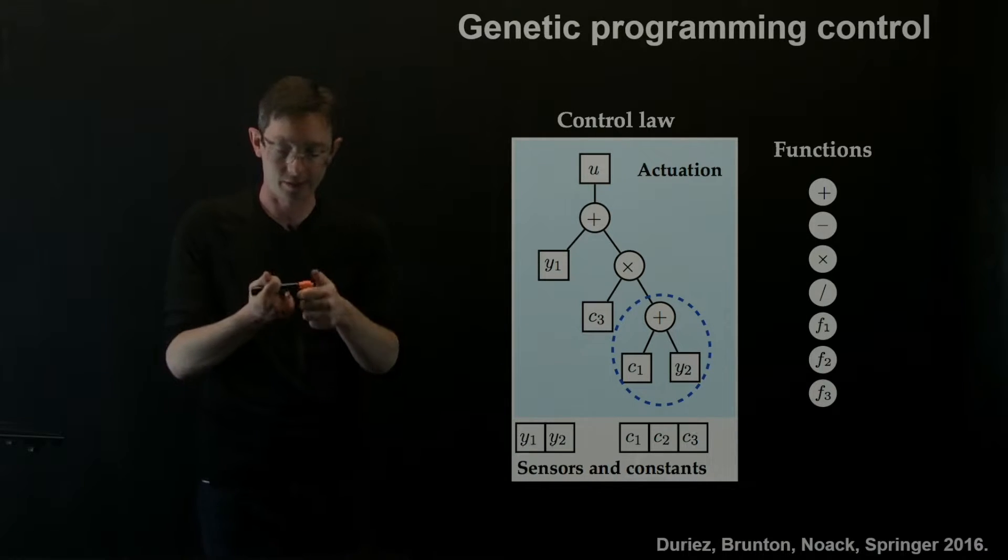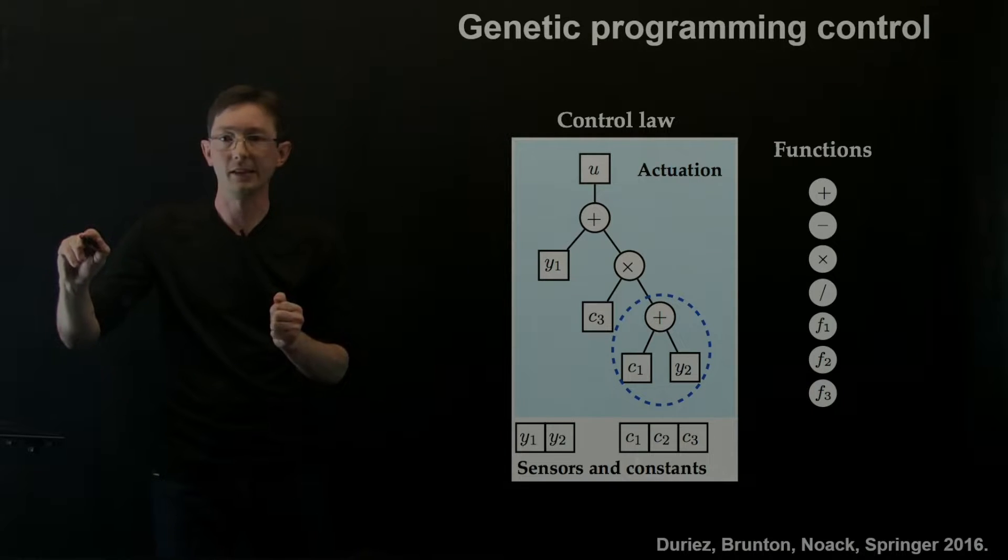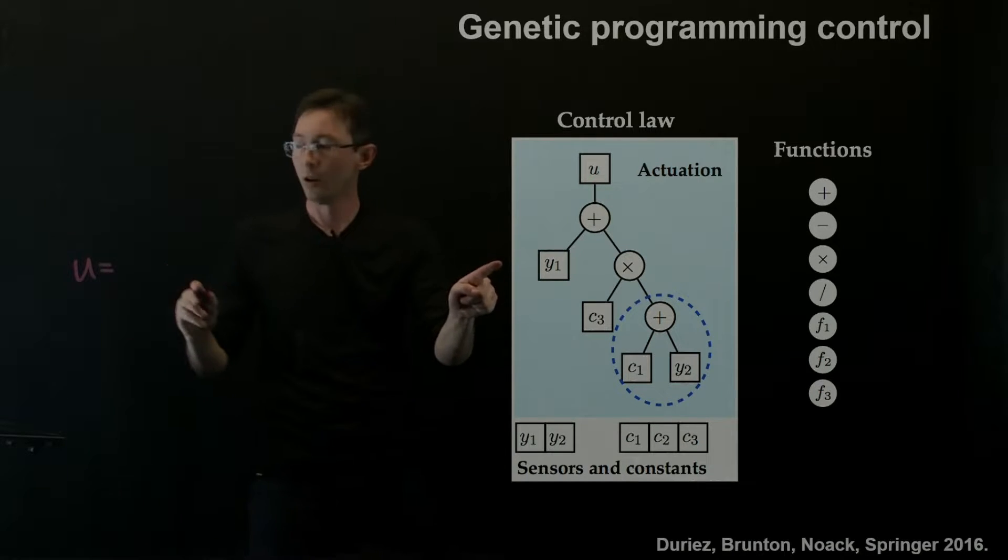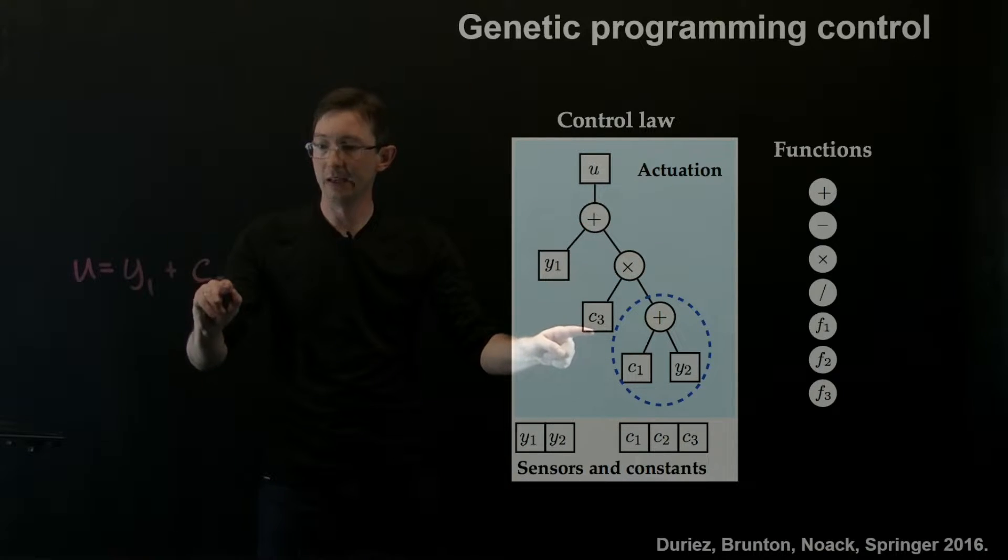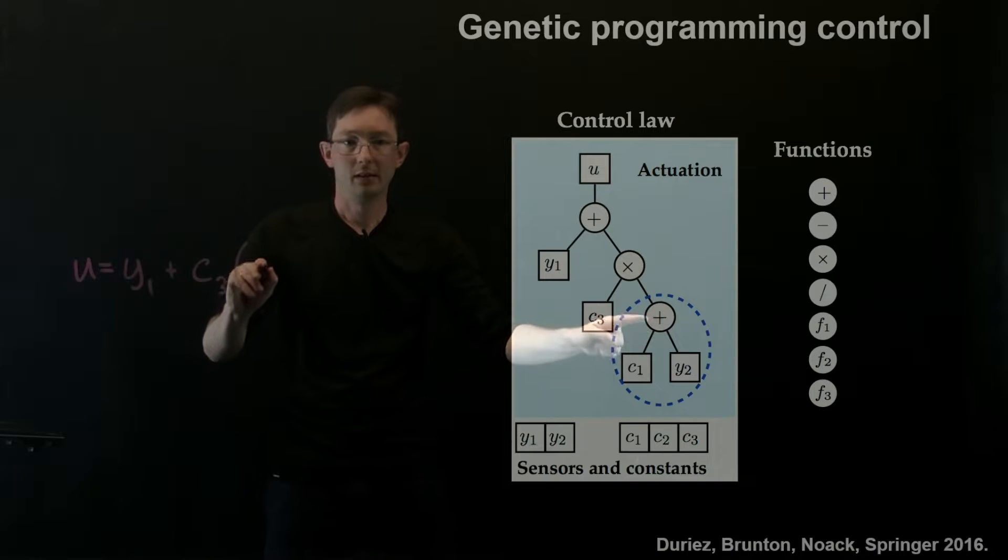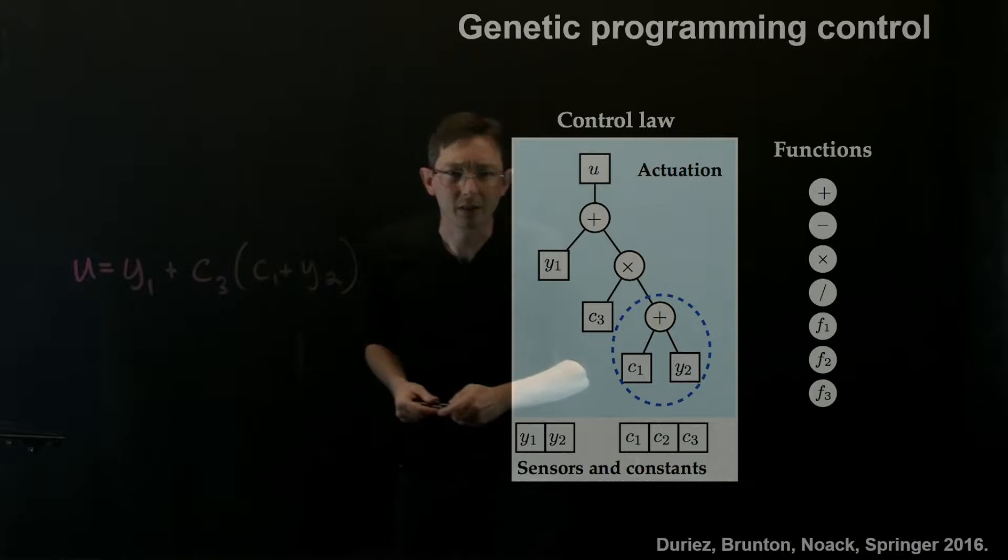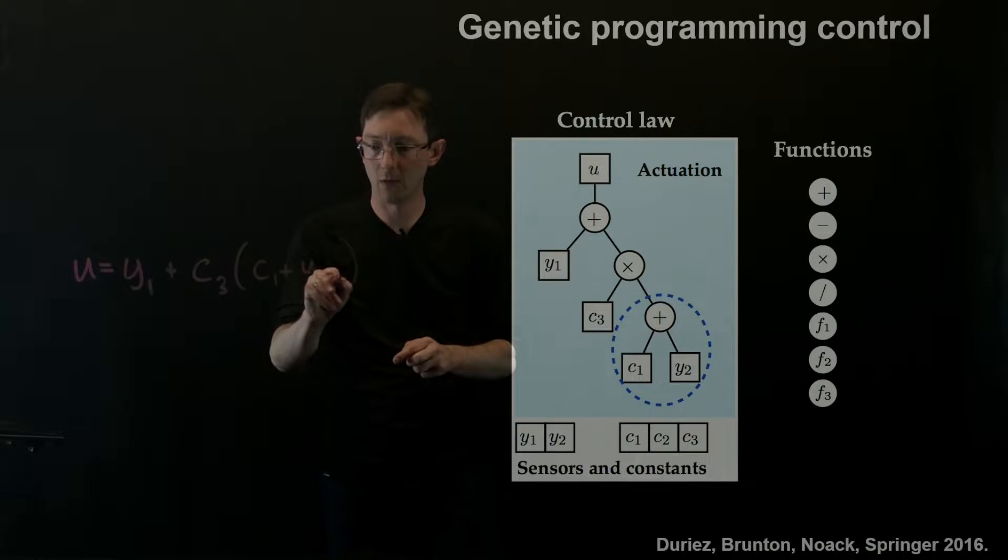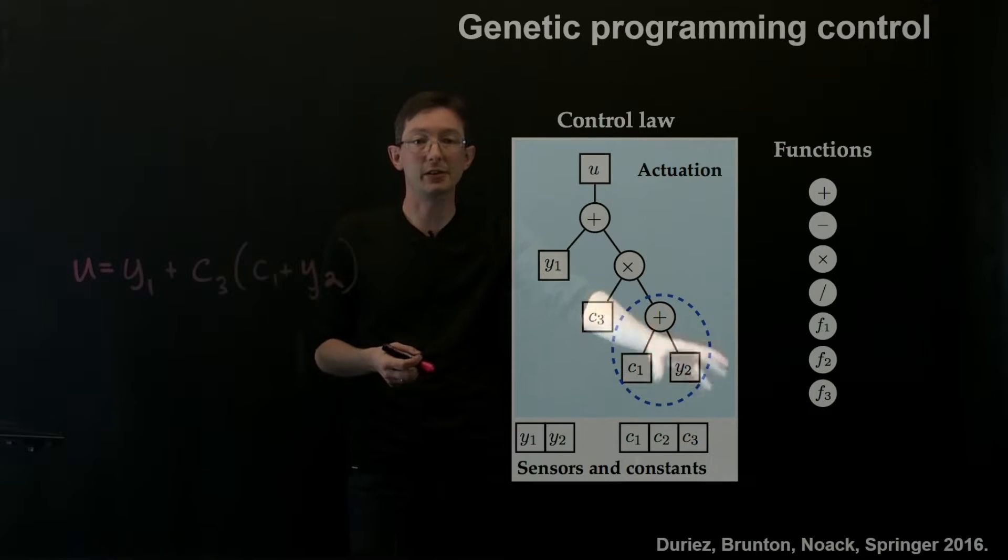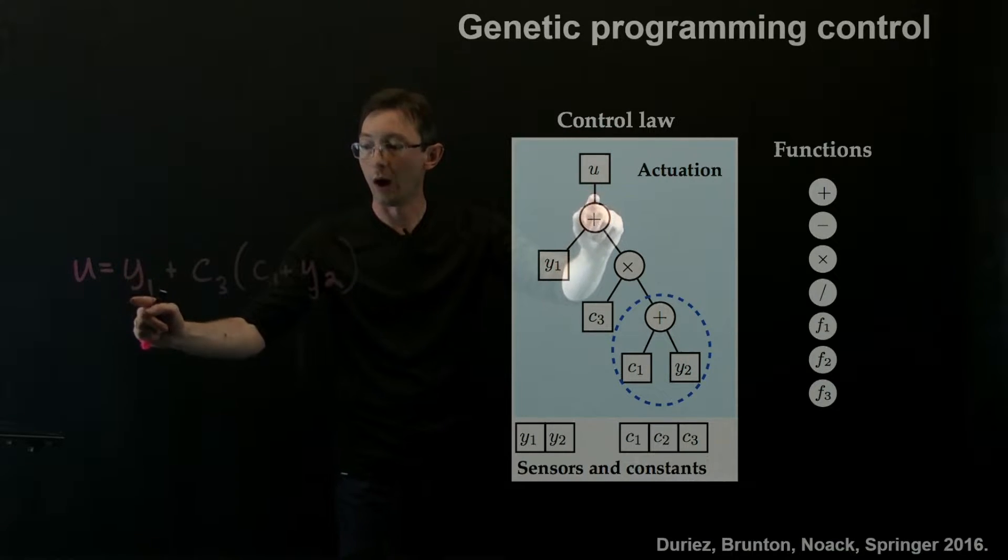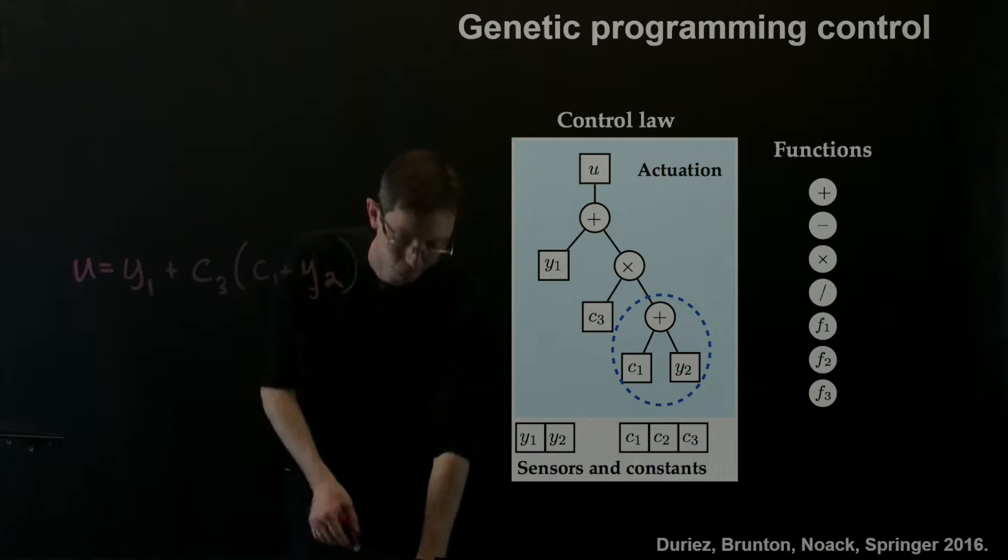And so in this case, it's always a little dangerous to do this live, but I'm just going to write down what this is. So here you can interpret this as u equals y1 plus c3 times c1 plus y2. Okay? So that's a little dim. I hope you can see that. So basically I can interpret this tree structure as the control law u equals y1 plus c3 times c1 plus y2.